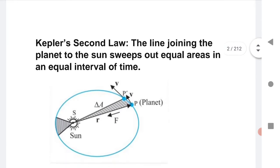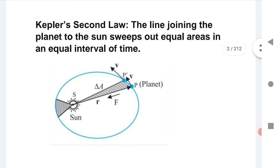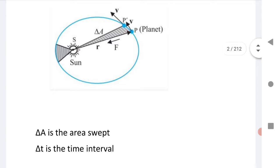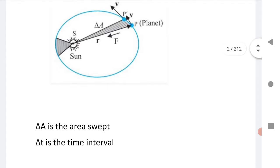Let us see the next law, that is the second law. The line joining the planet to the sun sweeps out equal area in equal interval of time. Here delta A is the area swept and delta T is the time interval.